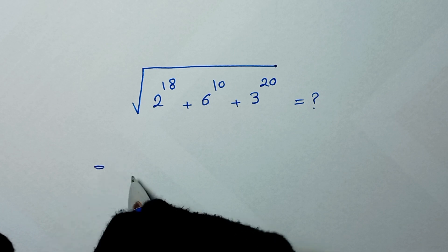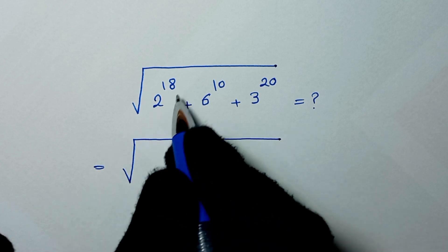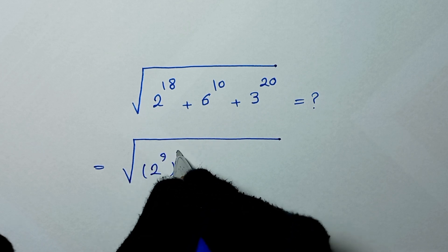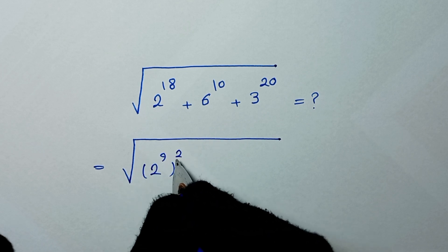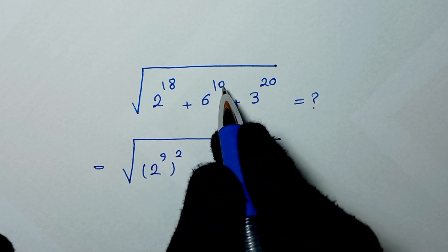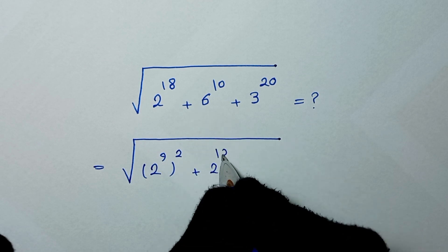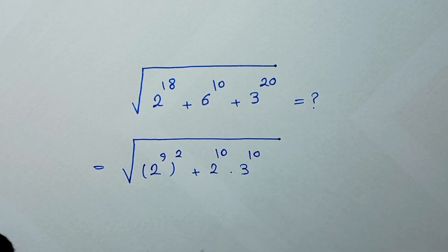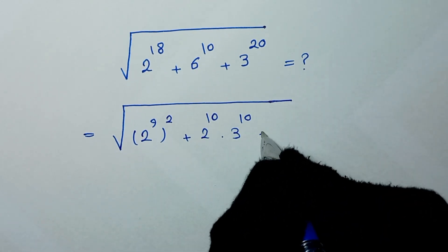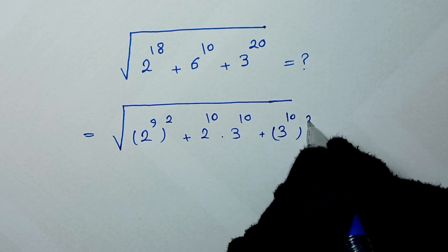In the first step, we write the square root of 2 to the power of 18 as 2 to the power of 9, squared — since 2 times 9 equals 18. Then we write 6 to the power of 10 as 2 to the power of 10 times 3 to the power of 10, since 2 times 3 is 6. And we write 3 to the power of 20 as 3 to the power of 10, squared.